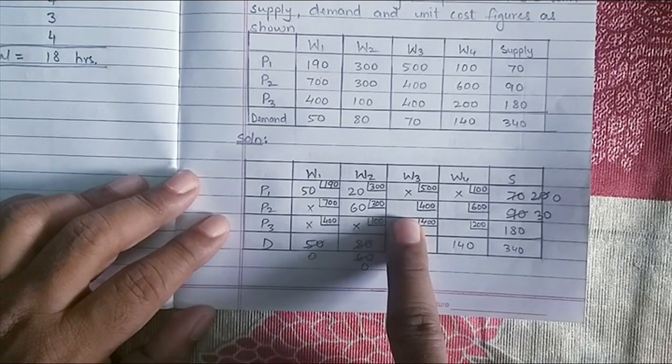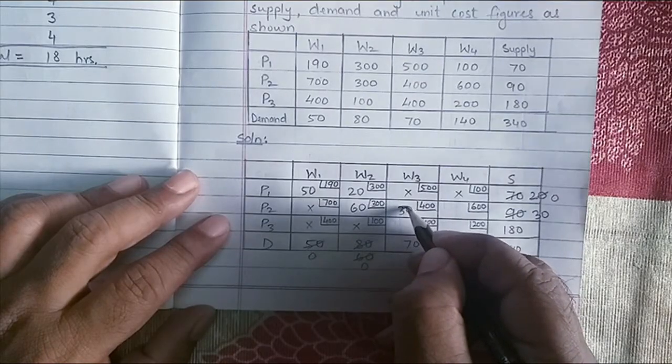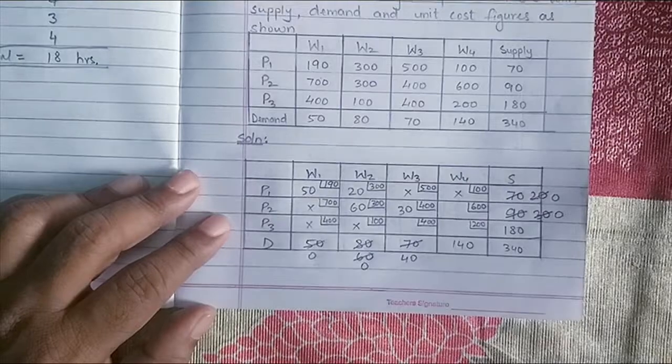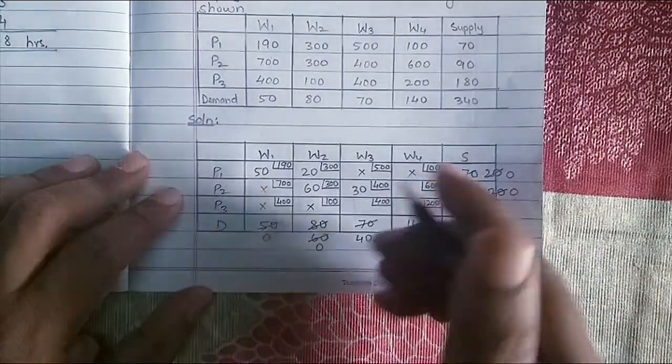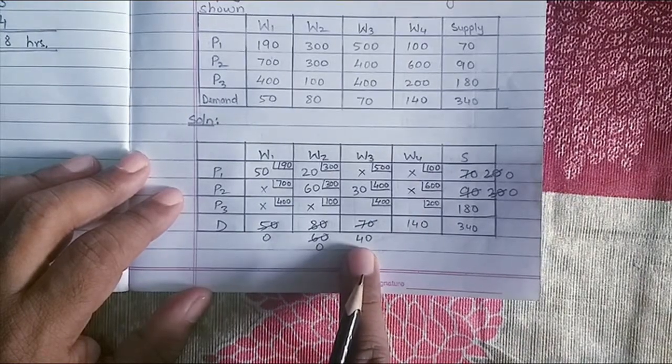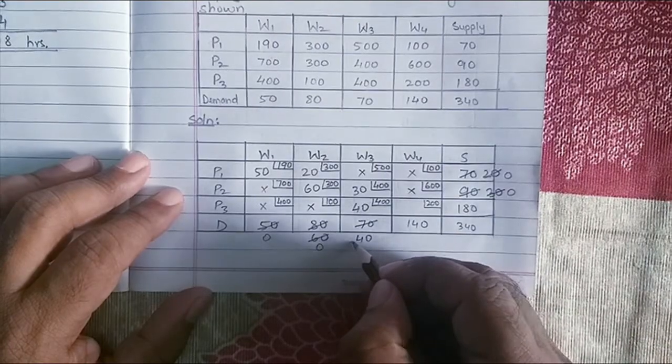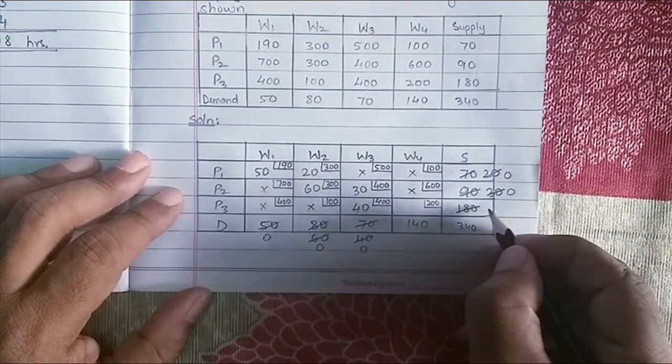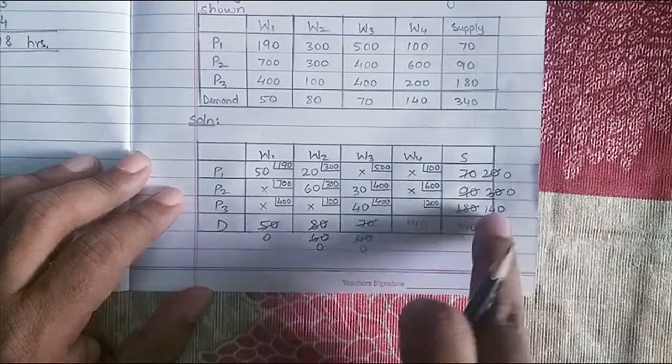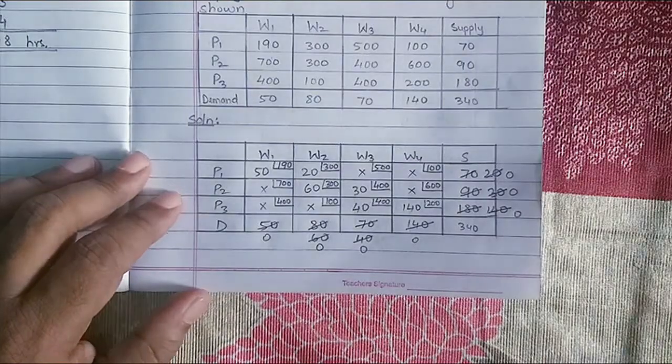Next cell where allocation has to happen is P2, W3. 30 and 70, least is 30. I assign the value 30 here. Subtract 30 from supply, subtract 30 from demand. 40 is remaining. Put a cross in this cell. There are only two cells left now. Here we have 40 in demand and 180 as supply. So directly I'll assign 40 here. Subtract 40 from this, subtract 40 from 180, I'll get 140. And the remaining cell, we have 140 demand and 140 supply. So 140 goes here. And we have completed all the allocations.